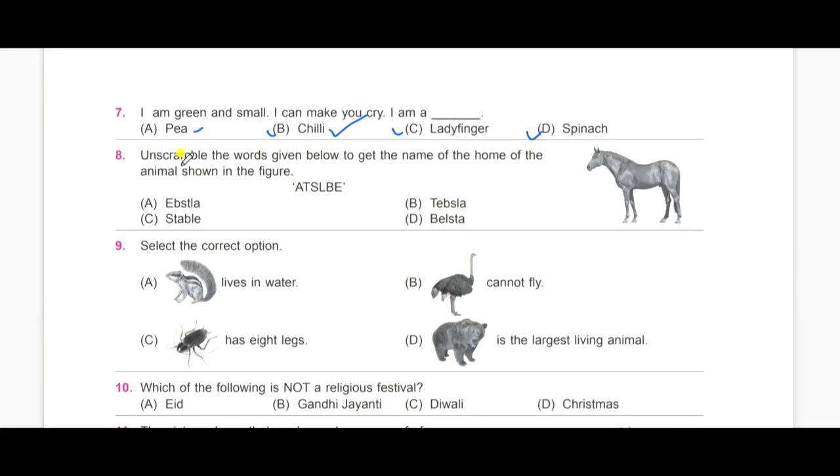The eighth one is. Unscramble the words given below to get the name of the home of the animal shown in the figure. So, this is the horse and we need to find the name. So, you have to unscramble. A, Epsla, B, Tepsla, C, stable and B, bell star. Those are quite funny names, right? So, the answer is C, stable.